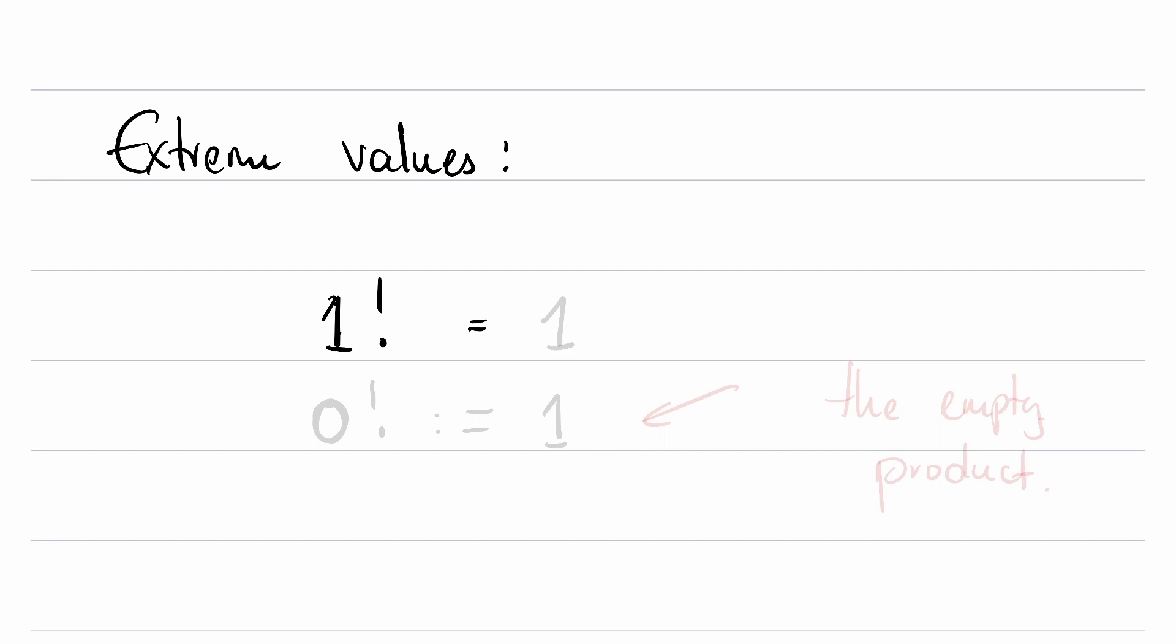It's all the products. It's the products of all the numbers from 1 up to n. In this case, n is equal to 1. So 1 factorial seems to make sense that that would be 1.